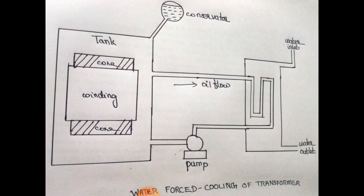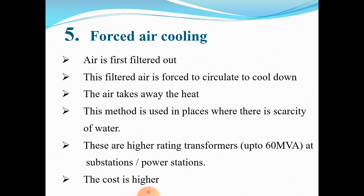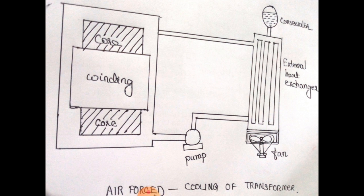This is the water-forced cooling transformer. Next is forced air cooling. Here, air is first filtered. Dissipation of heat takes place by a convection process in which forced air is circulated to cool down the transformer, and this air takes away the heat. This method is used in places where there is scarcity of water, for higher-rating transformers up to 60 mega volt-amperes at substations and power stations. Its cost is higher compared to other processes. This is the air-forced cooling transformer.